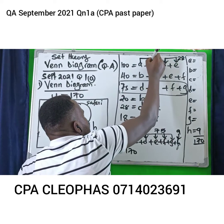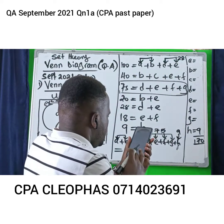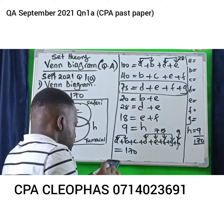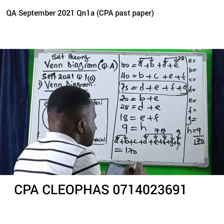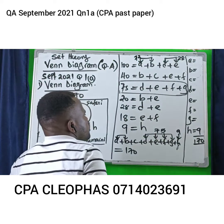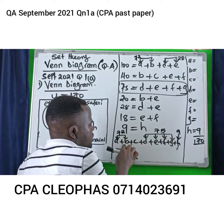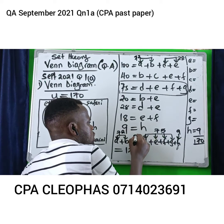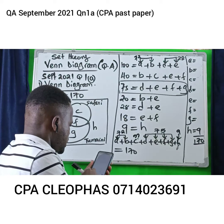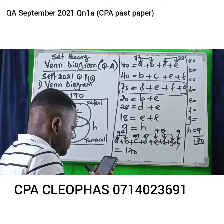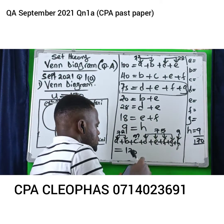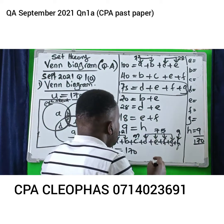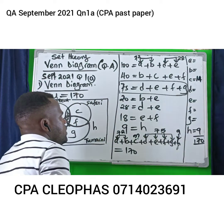So A plus B is 72. The rest I have the values for, and the total should be 170. So C will be 170 minus 9 minus 75 minus 72. Let me do it using a calculator: 170 minus 9 minus 75 minus 72. You get C as 14. So C is 14.